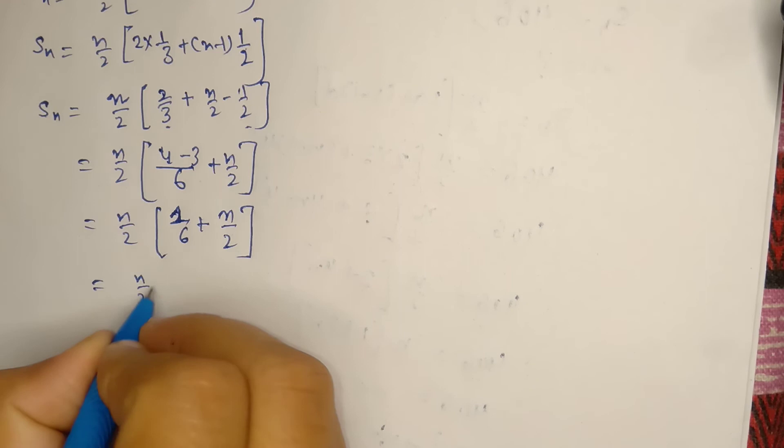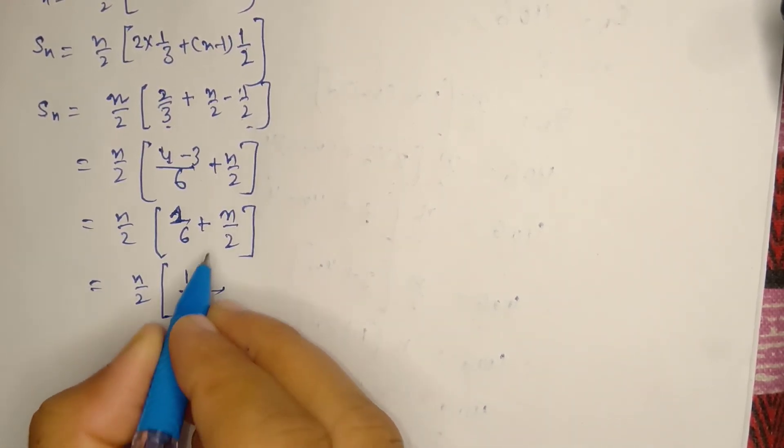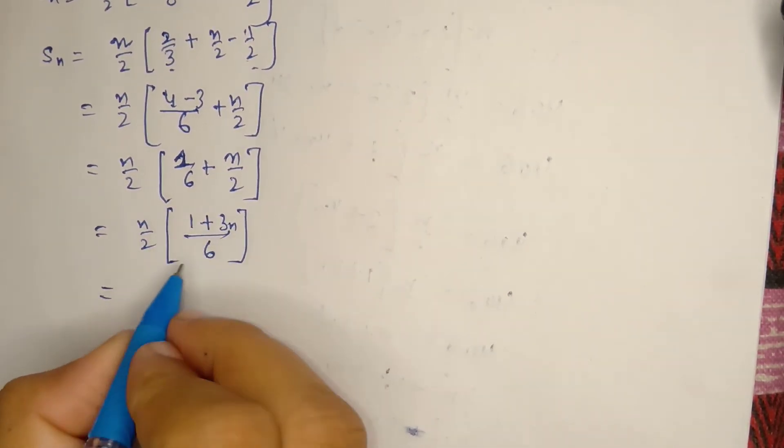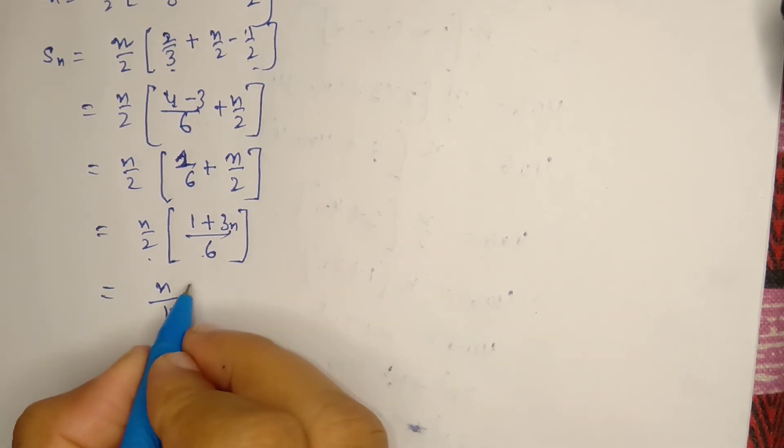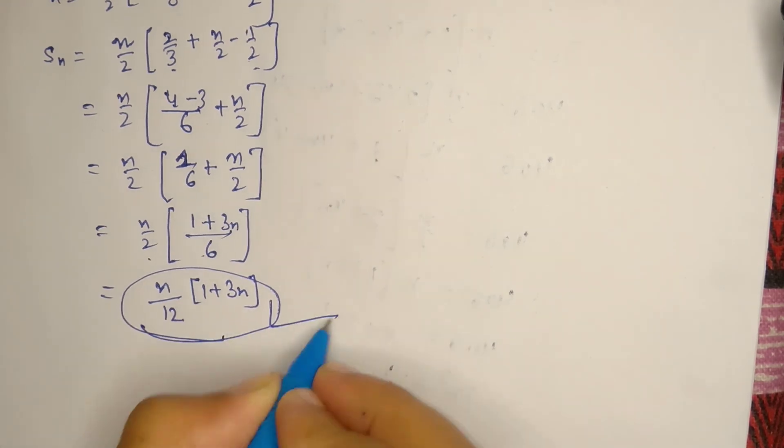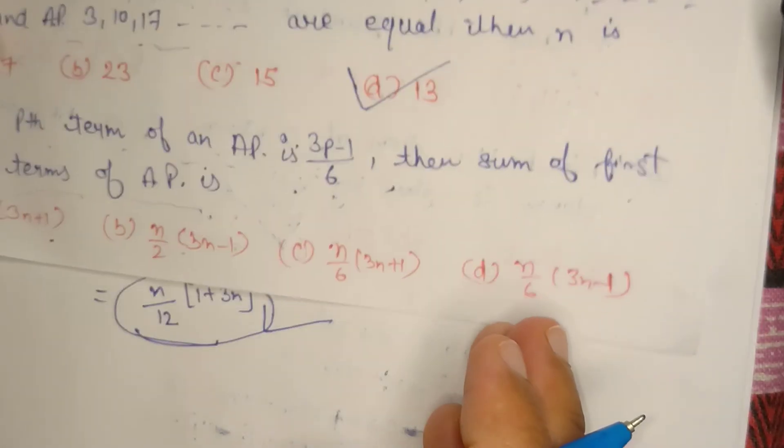n by 2, taking LCM 6, we get 1 plus 3n. So n/12 times (1 + 3n), this is your answer.